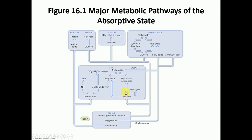The liver can also change glucose into fatty acids and glycerol. Triglycerides are made from one glycerol molecule and three fatty acid chains. The liver can convert glucose into glycerol and fatty acid chains, combine them to make triglycerides, which can then be stored in the liver — leading to a fatty liver — or stored in the adipocytes, basically fat cells.